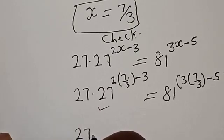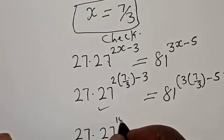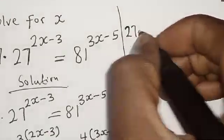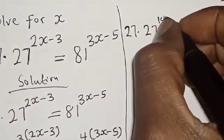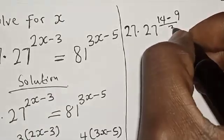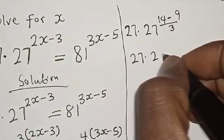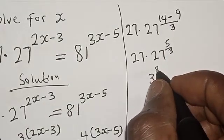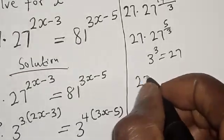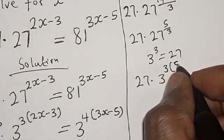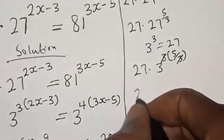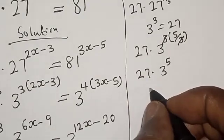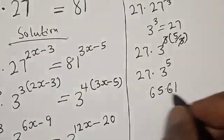For the left hand side, we have 27 multiplied by 27 raised to the power 2 times 7 over 3, which is 14 over 3, minus 3. This gives 27 raised to the power 14 over 3, and 27 multiplied by 27 raised to the power 4 minus 9 over 3, which is 5 over 3. Since 27 is the same as 3 raised to the power 3, we have 27 multiplied by 3 raised to the power 3 into 5 over 3. The 3s cancel, giving 27 multiplied by 3 raised to the power 5. The final left hand side result is 6561.